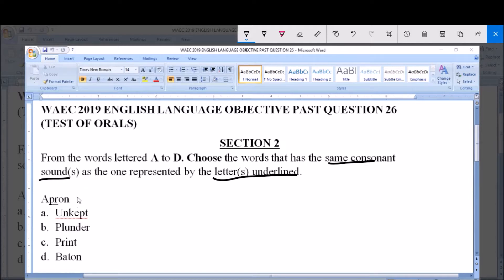So what I will do is transcribe the word given to us and then transcribe the options so we can pick out the consonant sound that's represented by the letters underlined and also pick out the answer that contains the same sound.